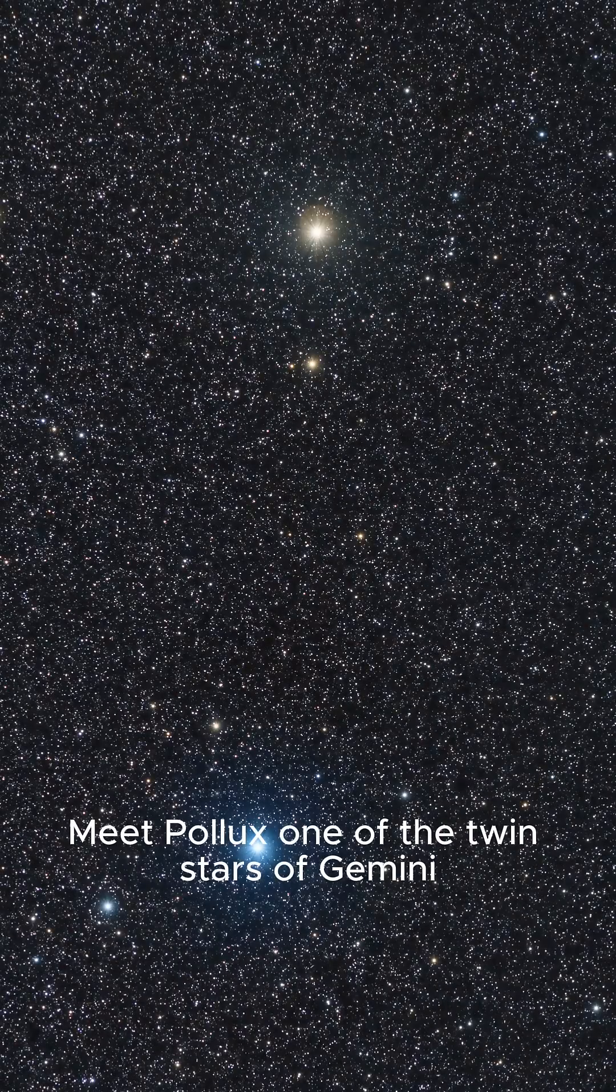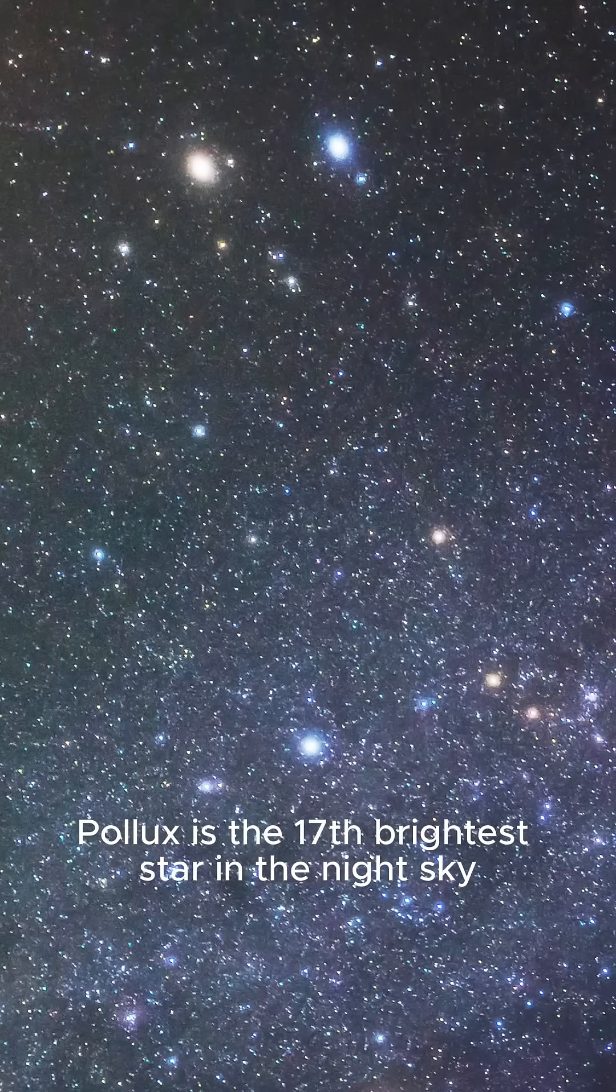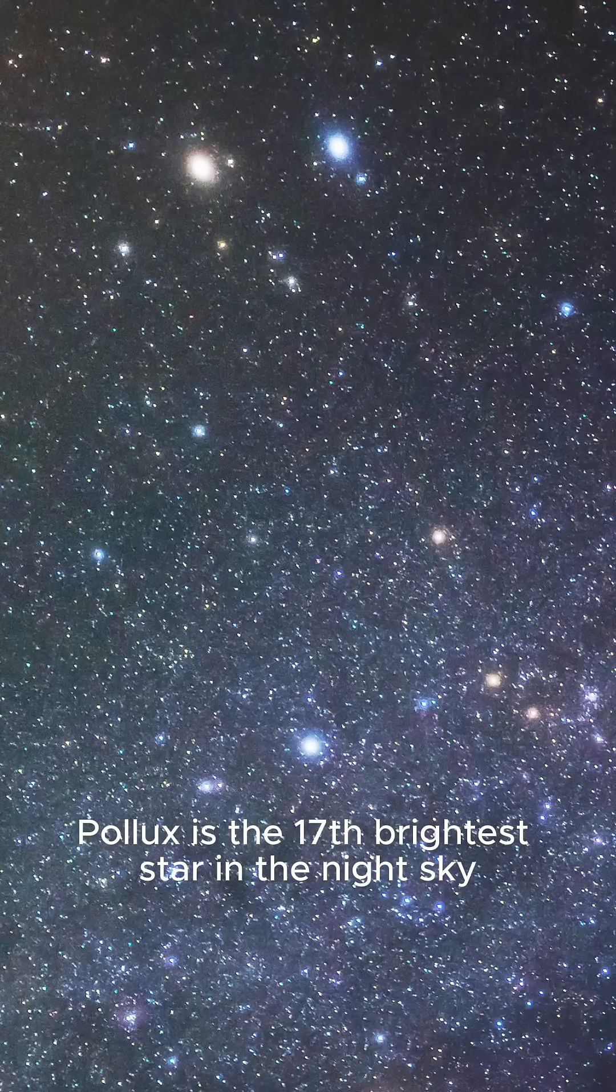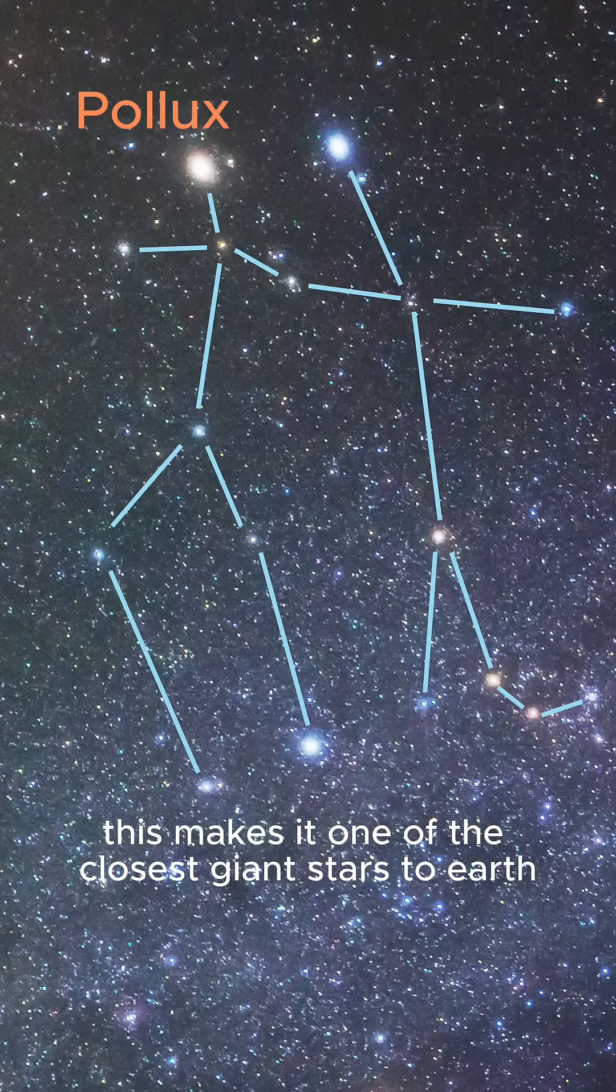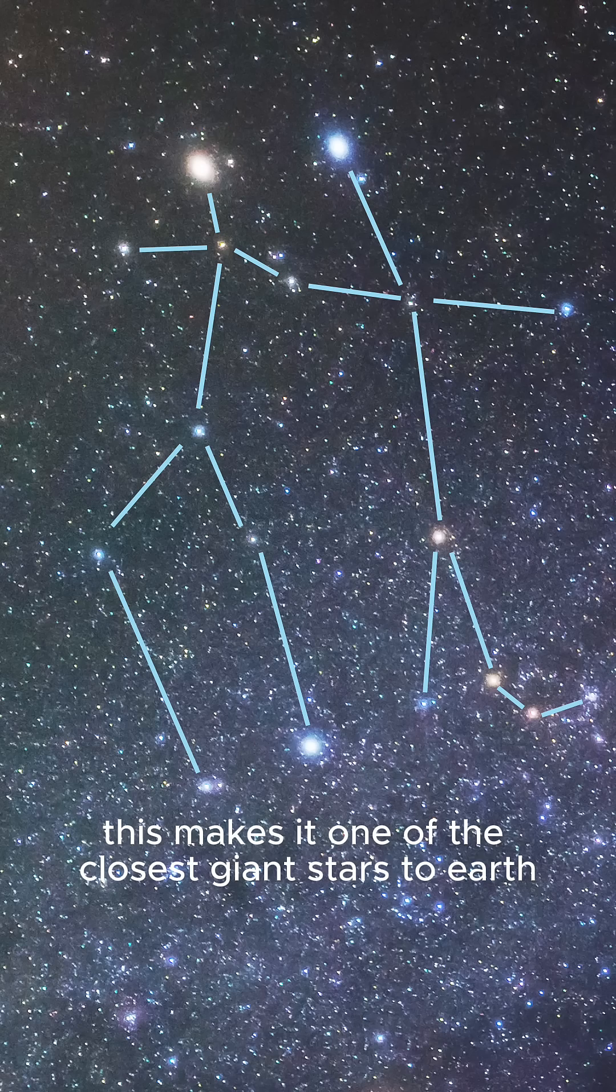Meet Pollux, one of the twin stars of Gemini. Pollux is the 17th brightest star in the night sky, located around 34 light-years away. This makes it one of the closest giant stars to Earth.